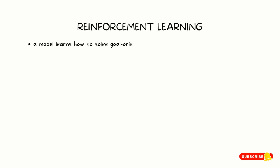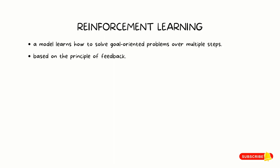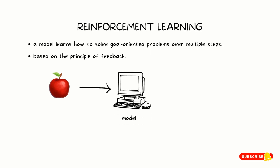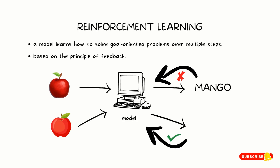Then there is reinforcement learning, where a model learns how to solve goal-oriented problems over multiple steps. Simply put, it's a trial and error method that works with the principle of feedback. Let's say you provide the model with the image of an apple and ask it to identify it. The model identifies it as a mango, so a negative feedback is returned to the model saying that it's an apple. The model will learn from this feedback and whenever it comes across the image of the apple again, it will correctly identify it as an apple. That is reinforcement learning.